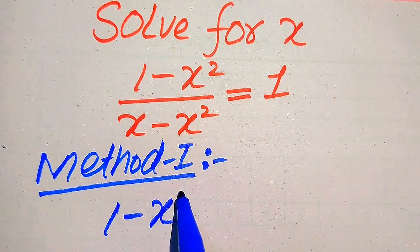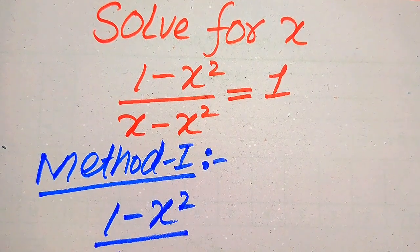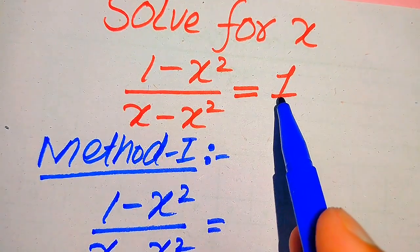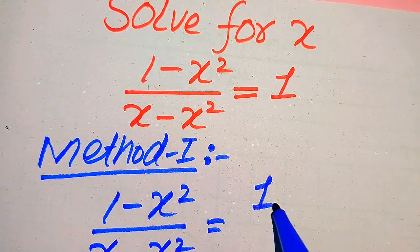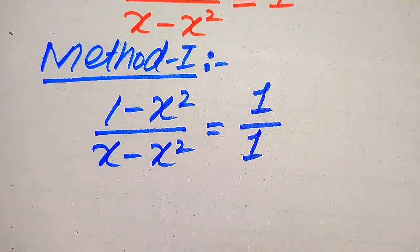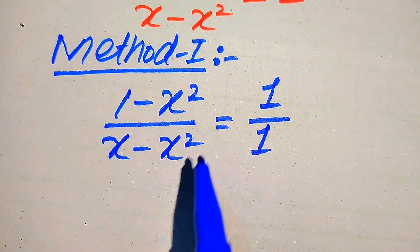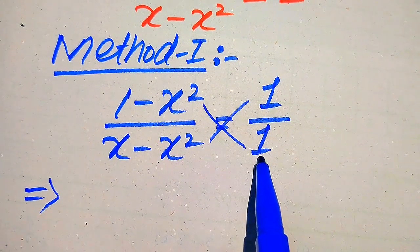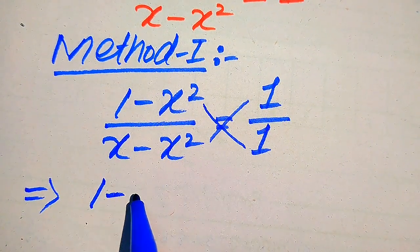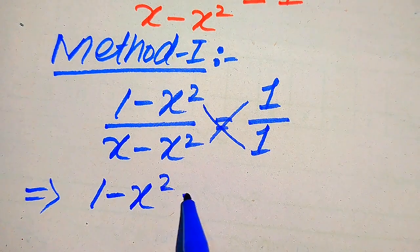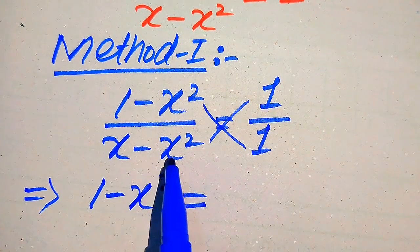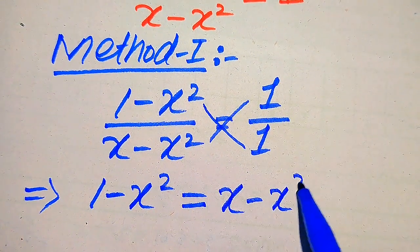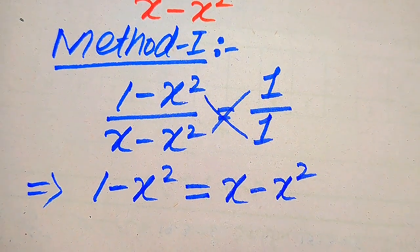In the first method, we focus on the right hand side. We have (1 minus x squared) divided by (x minus x squared), and on the right hand side we have only 1, which we write as 1 divided by 1. We cross multiply the terms: 1 times (1 minus x squared) equals (1 minus x squared), and (x minus x squared) times 1 equals (x minus x squared).